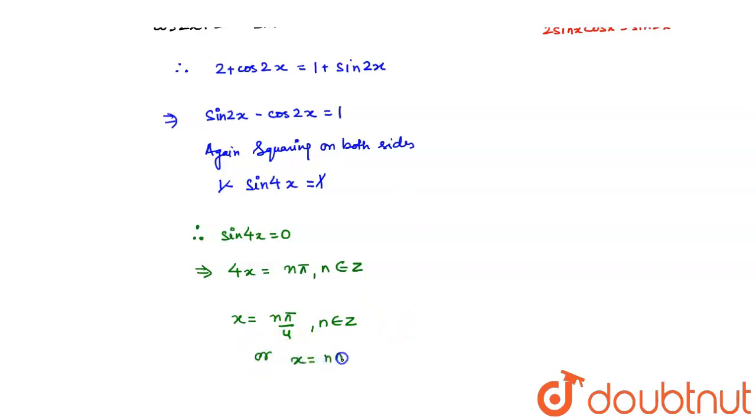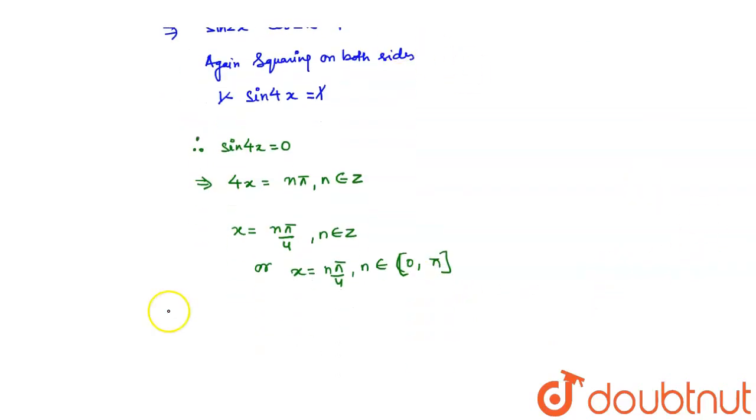Or, x belongs to n pi by 4, where n belongs to 0 to 2 pi, which is the given range in the question. Correct? So, now, we have solutions.